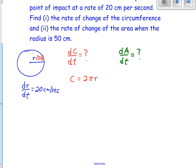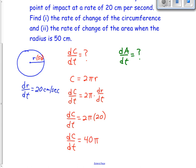Now let's differentiate everything with respect to time. The derivative of C with respect to time is dC/dt. The derivative of 2πr is 2π times the derivative of r with respect to t, which is dr/dt. Now we can plug in our value for dr/dt, which was 20. We get dC/dt equals 2π times 20, so dC/dt equals 40π centimeters per second.